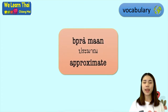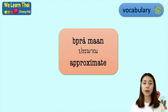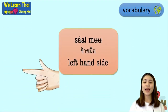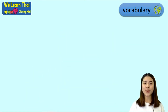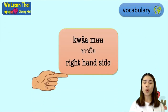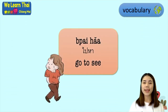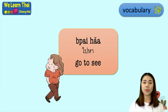The next word is 'bramann', meaning approximate — when you're not sure about a number or distance, you say 'bramann'. Then 'saai mea' means left hand side. If you want to say right hand side, you can say 'kwa mea'. And next, when you want to go to see your friend or your family, you use the word 'bai ha'.